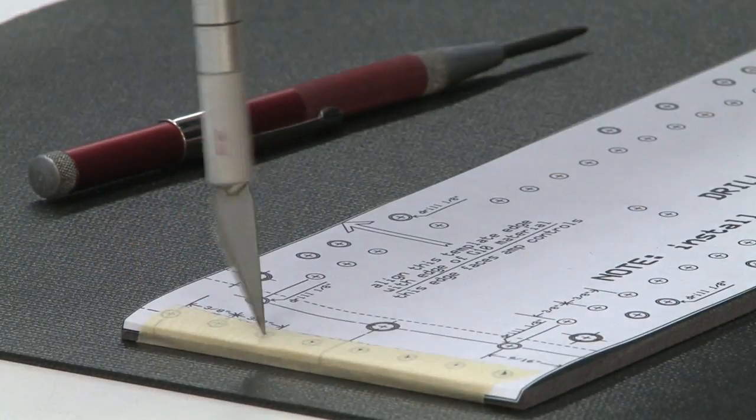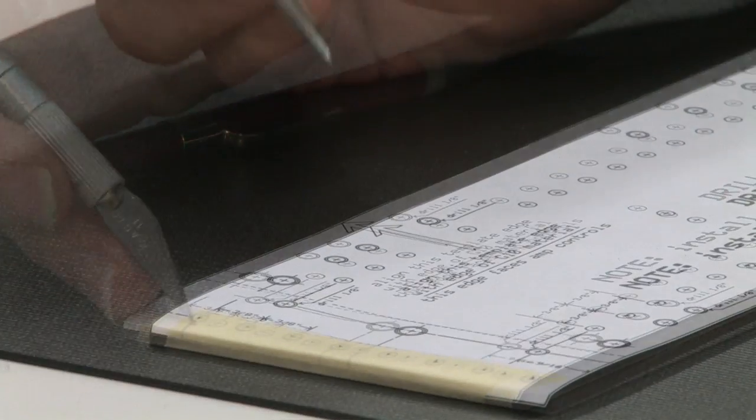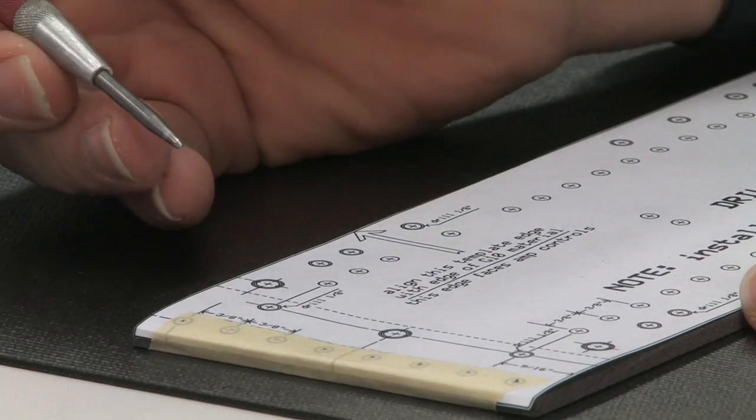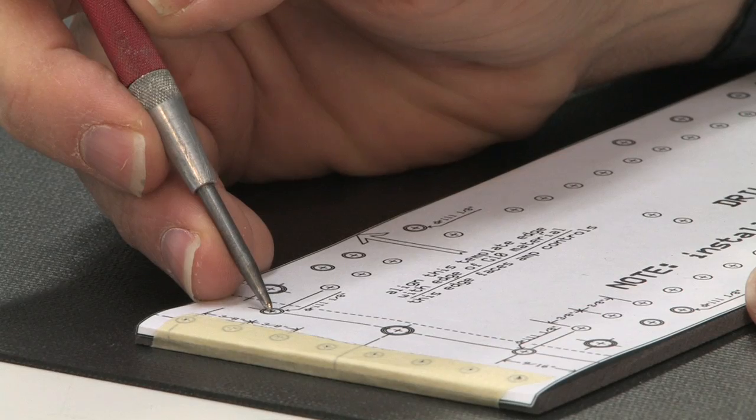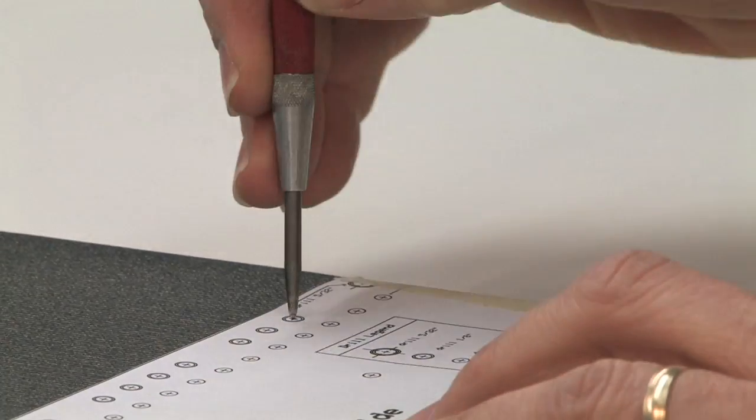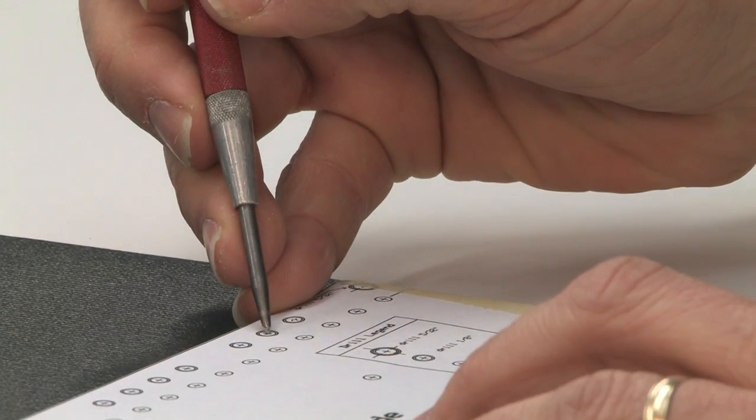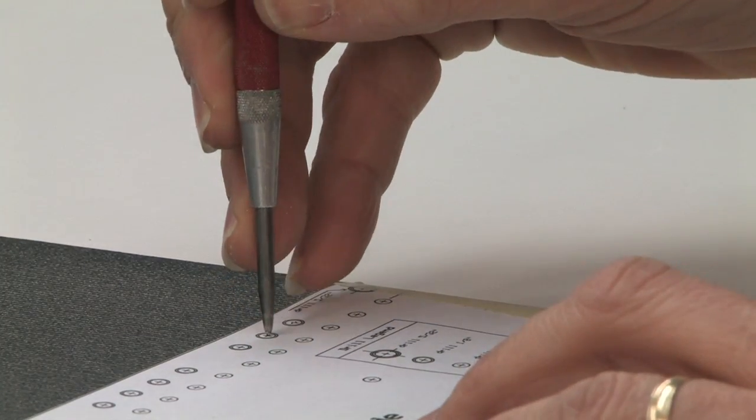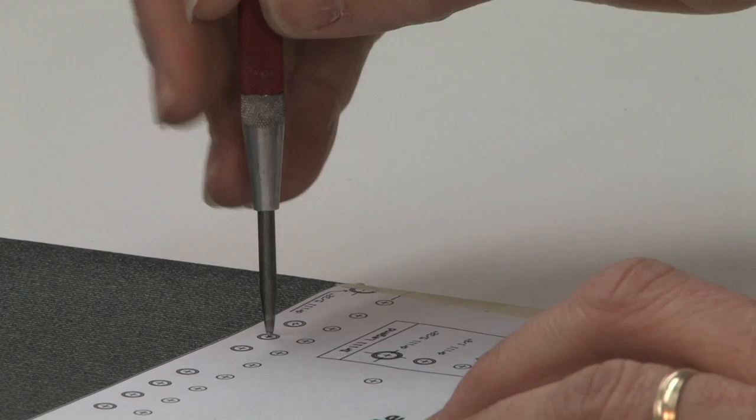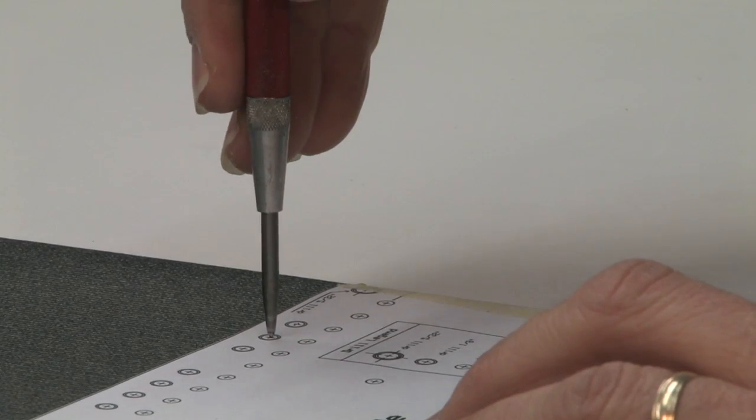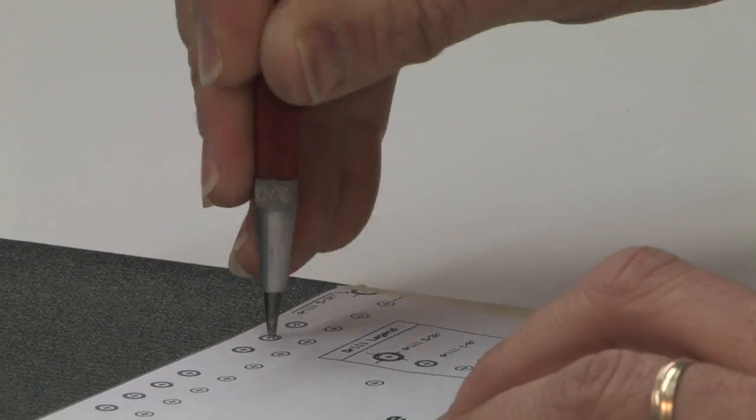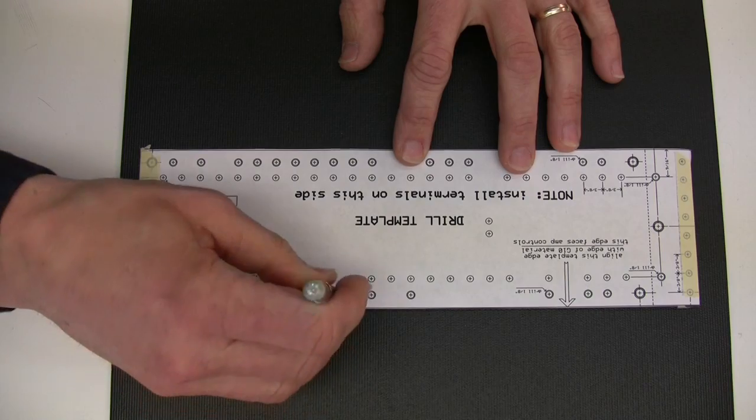Now a faster way of taking the information from the template and moving it to the board is to use a center punch. What a center punch does is you find the spot and you press the center punch down. As you press that center punch down, it's going to leave a small little divot into the board which makes a perfect spot for the drill bit to sit in when it makes a hole.